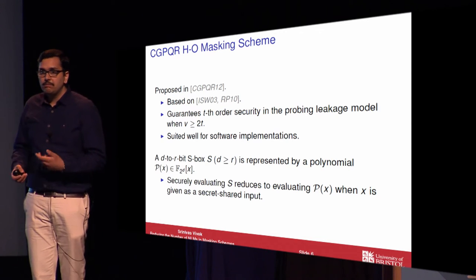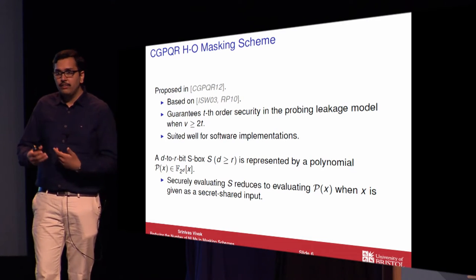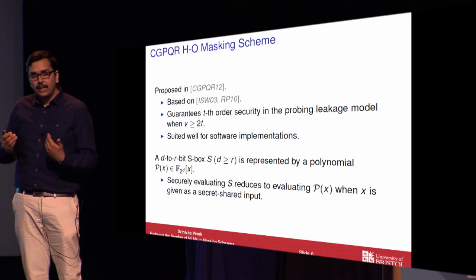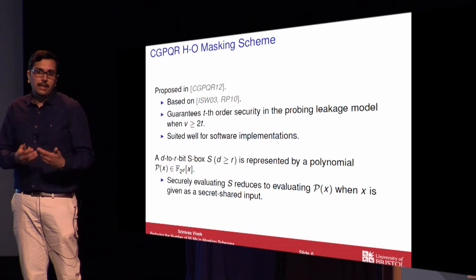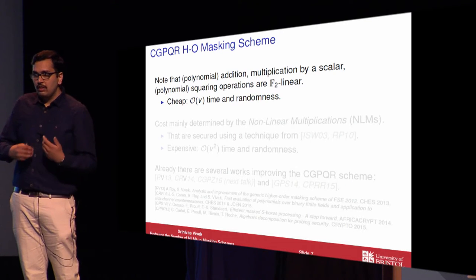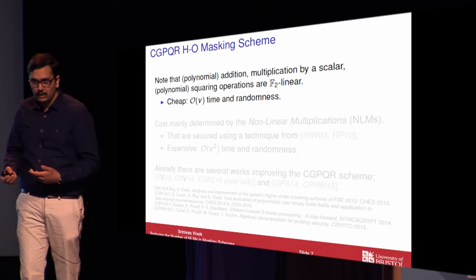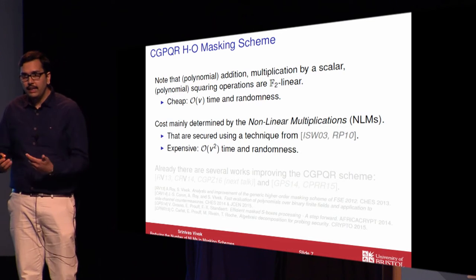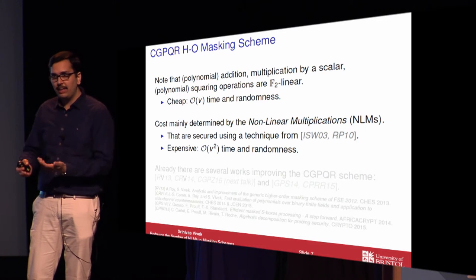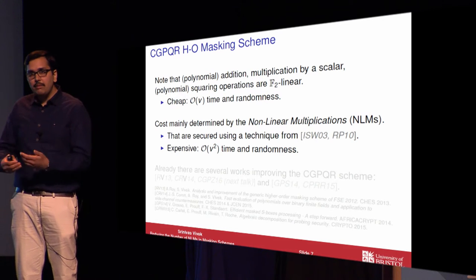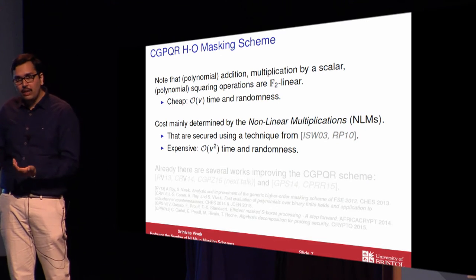The main idea behind their scheme is to represent a D-to-R bit S-box as a polynomial over a field of F2 power D elements, and then securely evaluating the S-box reduces to the problem of evaluating a polynomial in the presence of shares. While evaluating polynomials over binary finite fields, polynomial addition, multiplication by scalar, and squaring operations are linear. The cost is mainly determined by the non-linear operations secured by the technique from Ishai, Sahai, and Wagner, and the time and randomness complexity to secure a non-linear multiplication over a binary finite field takes quadratic amount of time and randomness.